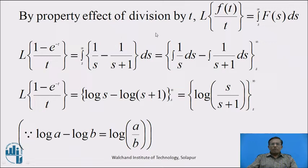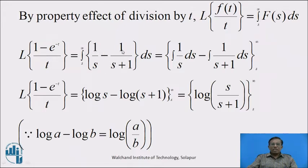Now, by the property of Effect of Division by T — that is, Laplace of f(t)/t equals integration with limit s to infinity of F(s) ds — in this result, replace f(t) by 1 - e^(-t) on the left hand side and F(s) by 1/s - 1/(s+1) on the right hand side. Therefore, Laplace Transform of (1 - e^(-t))/t equals integration with limit s to infinity of [1/s - 1/(s+1)] ds.